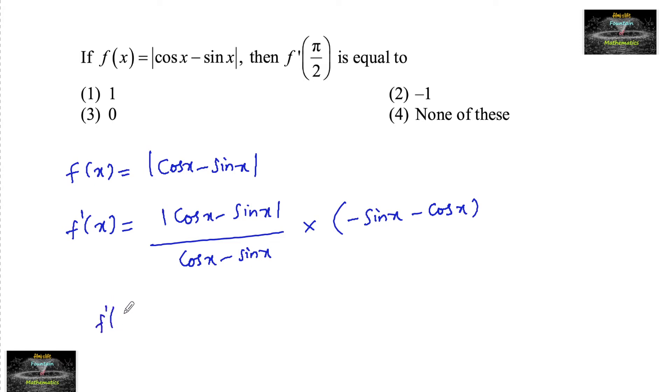So now we need to find f prime of π by 2, that is mod of cos π by 2 minus sin π by 2,